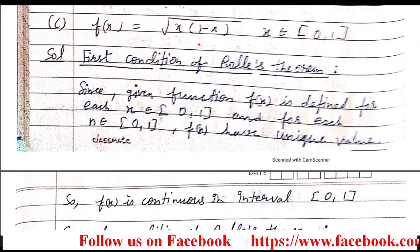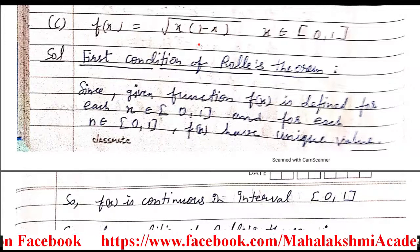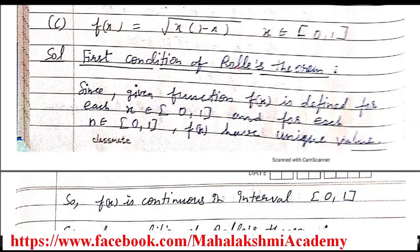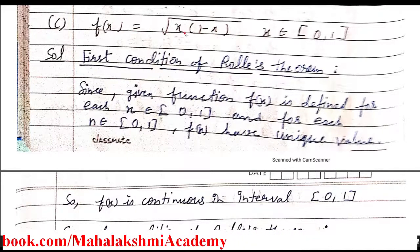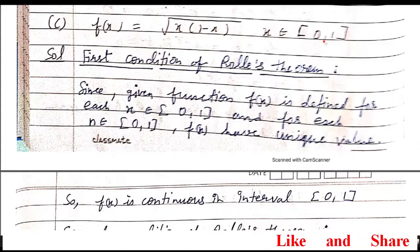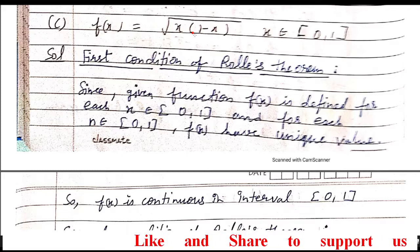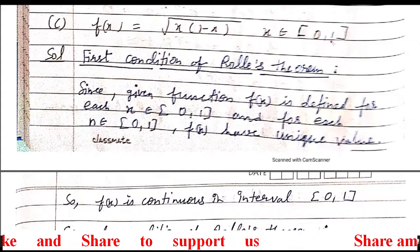First condition of Rolle's theorem is that the function should be continuous in the closed interval. So we will start by checking that. Since the given function is root of x(1 minus x), we have to prove it is continuous in the closed interval. To prove it we have to check that for all x belonging to 0 to 1, the function is defined.